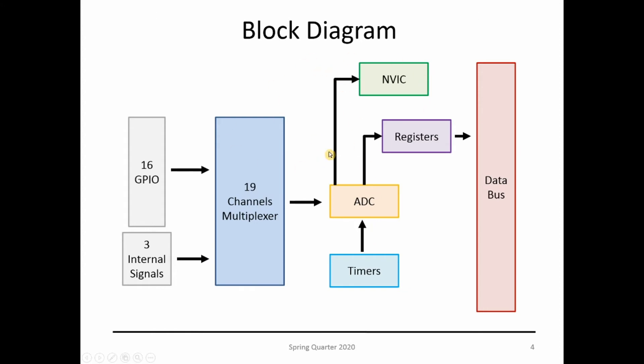This is the generic block diagram. You have the ADC in the middle with 16 GPIOs plus three internal signals that connect to a multiplexer. If you're using just one channel, you have the full bandwidth for your ADC, but if you're using more than one, you need to be careful because you're losing bandwidth as you switch between channels. The ADC can be controlled using timers, and it puts values into registers that can be accessed on your data bus. You can also parameterize the NVIC to have interrupt routines associated with the ADC.